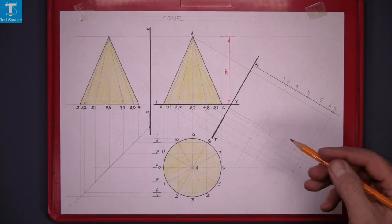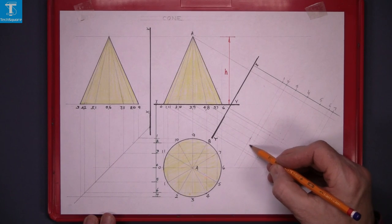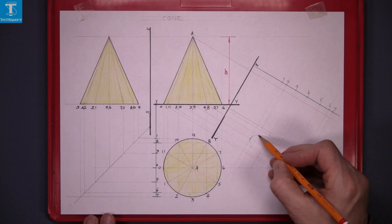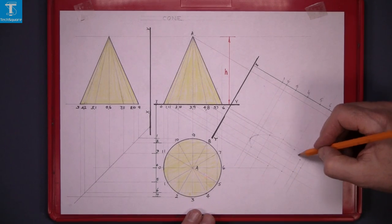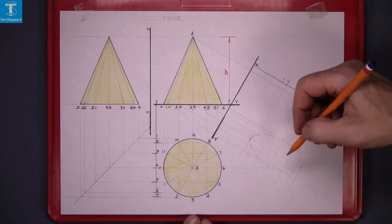Now a freehand curve through those points and just lining the curve lightly at the beginning. So that's your curve now lined in lightly.